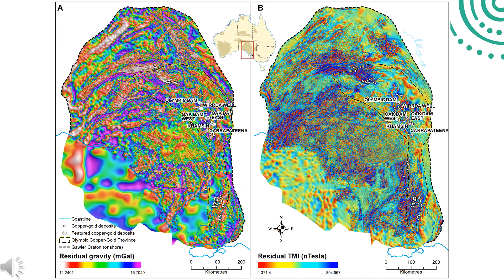Gravity has been the primary IOCG exploration targeting dataset in South Australia, followed by TMI. Early exploration drilled on gravity or magnetic anomalies and many of the known deposits were discovered using this technique. However, drilling 1,000-plus metre drill holes is a very expensive exercise and there is a real need to find ways to make discoveries using fewer drill holes. For this study we have used the entire Gawler Craton as the study area, treating residual gravity and TMI as populations of geophysical anomalies within that study area.